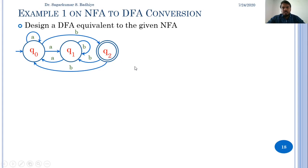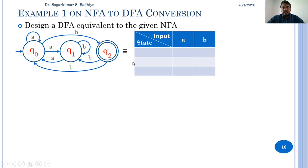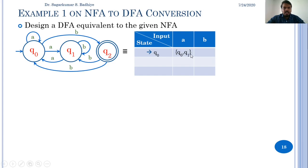We convert this transition diagram to a transition table. This table represents the present state, input, and in this column it represents the next state. The initial state of the NFA is q0. In q0, if 'a' is the input, the next state can be q0 or q1, as there are two transitions on 'a'. So on q0 if we get 'a' as input, the state may transit to q0 or q1. This is represented by a set in the transition table.